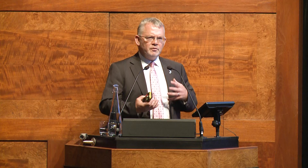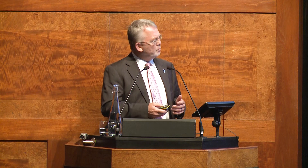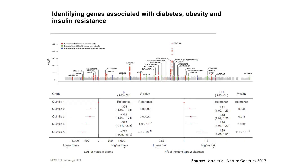One example is from work we've done on insulin resistance, which is one of the key underpinning pathophysiological abnormalities that leads to type 2 diabetes. We've used genetic techniques to identify risk scores that predict the degree to which people have resistance to insulin. Putting people into quintiles of how many common risk alleles for insulin resistance they carry, those in quintile 5 have a high genetic predisposition and show an increased risk of type 2 diabetes, which is quite strong.